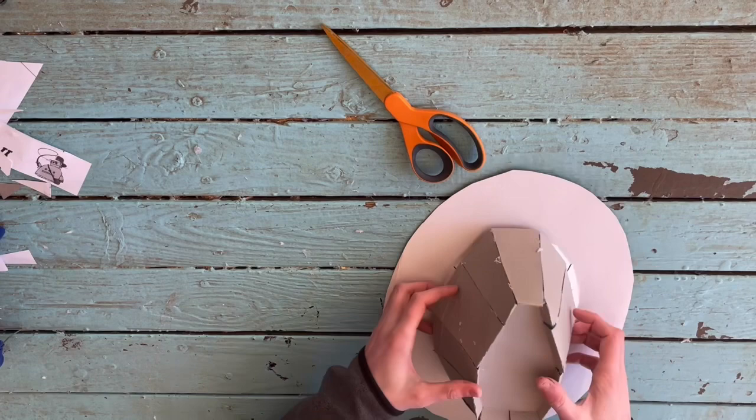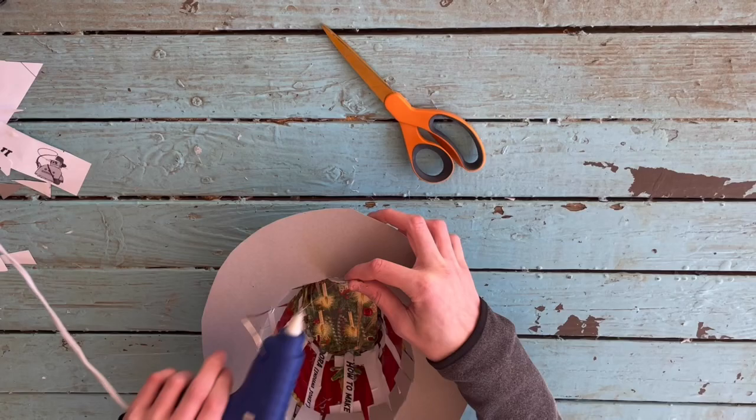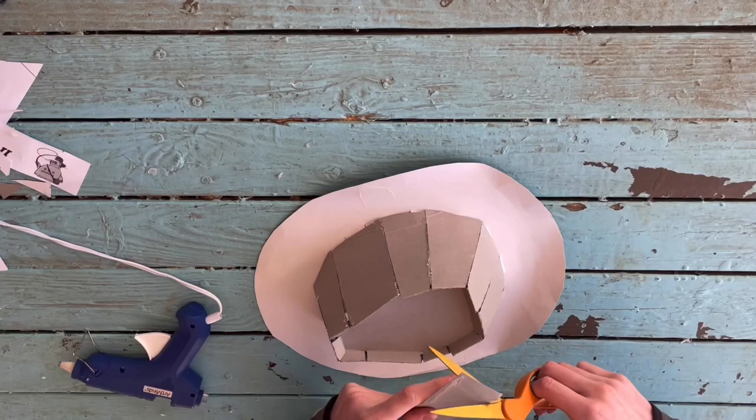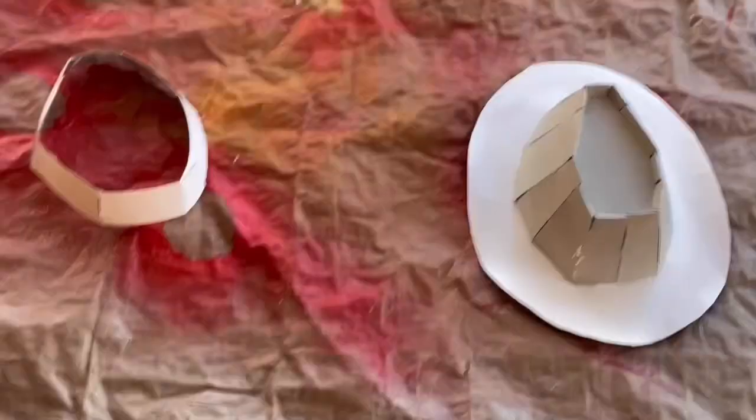Now I had to make the ring that went around the hat, but the template didn't have anything for this part, so I just freestyled it. It's kind of hard to explain what I'm doing here, but I was cutting the cardboard at the right angles to make it bend around the hat.